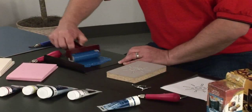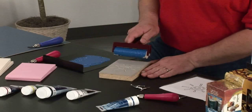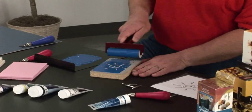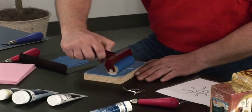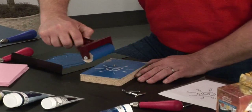Once you get a nice even layer, you want to transfer that ink in both directions and try to get a nice even coating of ink onto your block.